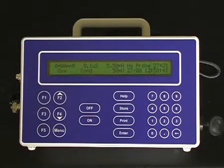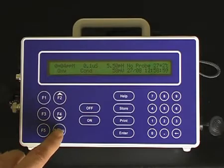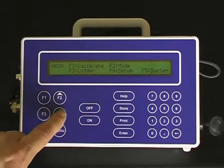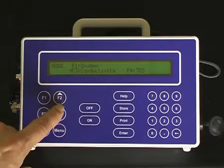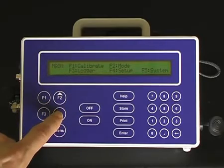To calibrate for TDS, the same sensor, the conductivity sensor, is used. However, the mode of the 90FLT has to be changed. Select Menu, F2 for mode, and F4 for TDS.